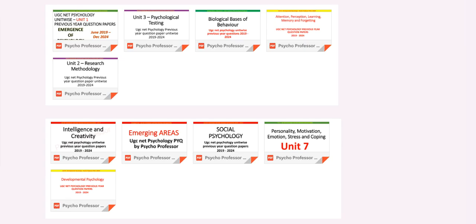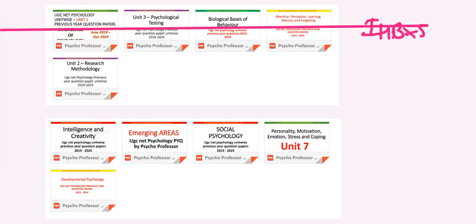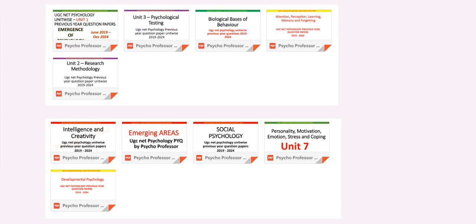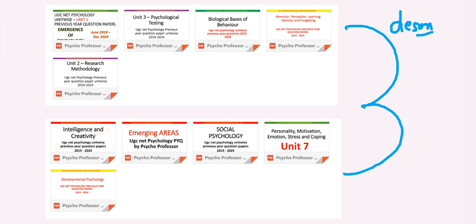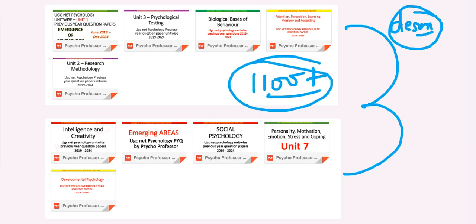That was it for this part. I hope you liked the video — make sure to hit the subscribe button. If you want to order the unit-wise PYQ ebook, check the description and follow the steps. There are approximately 1100+ questions arranged unit-wise with answer keys. If you don't know an answer, go back to the C, A, and F framework.